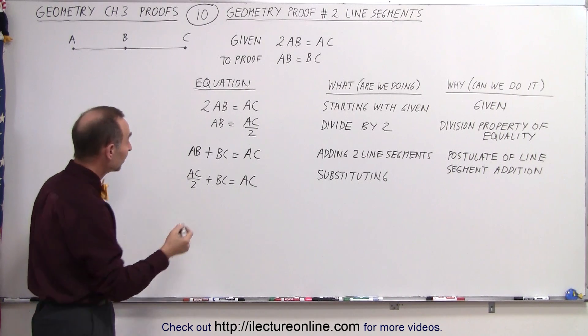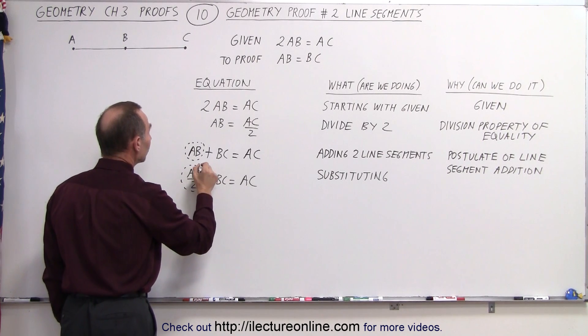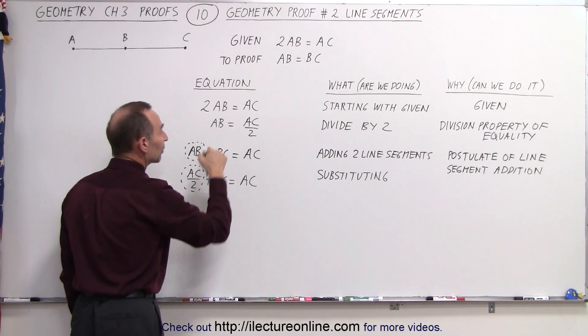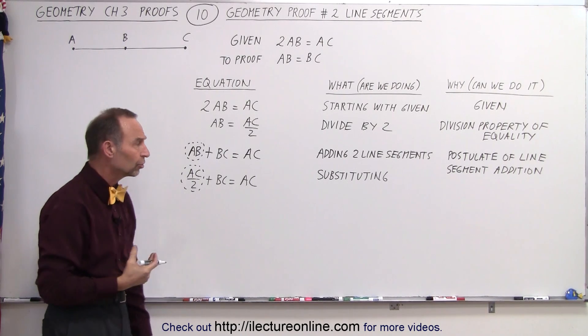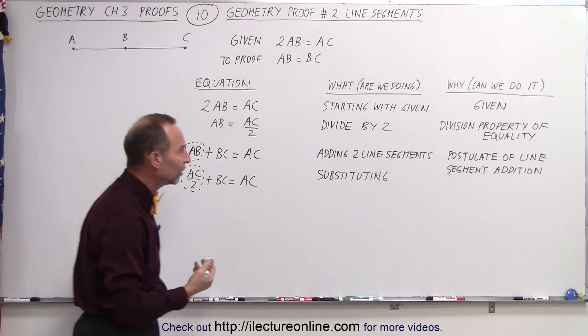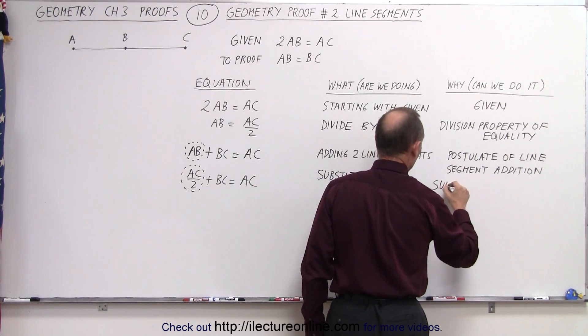Why can I do that? Well, I can replace AB by AC divided by 2 because over here it tells me that those are the same. So I'm making a substitution. And why can I make that substitution? Well, I can do that because it's what we call the substitution property of equality.